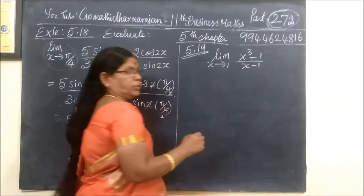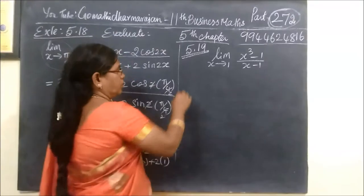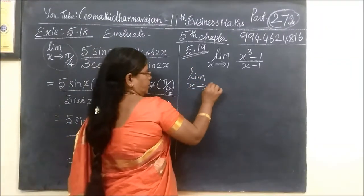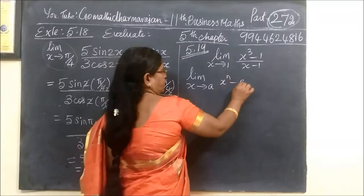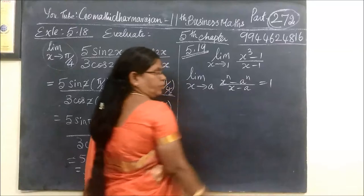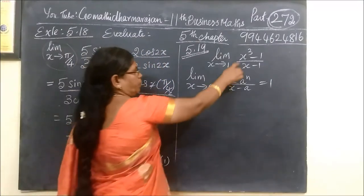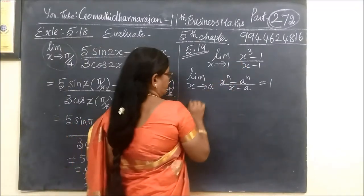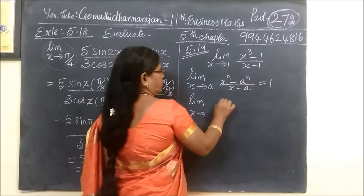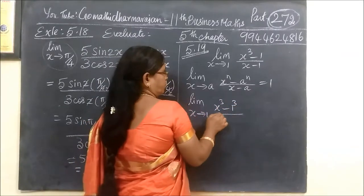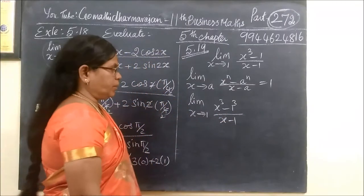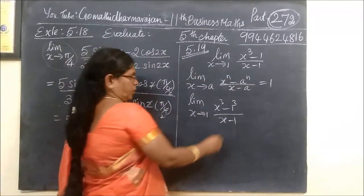Now coming to the next question. Limit extends to 1. It is easy. This time limit extends to a: x^n minus a^n, divided by x minus a, is equal to n·a^(n-1). So here, limit extends to 1: x³ minus 1³, divided by x minus 1.